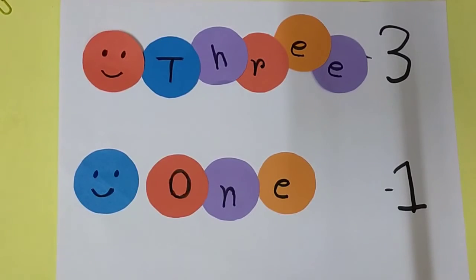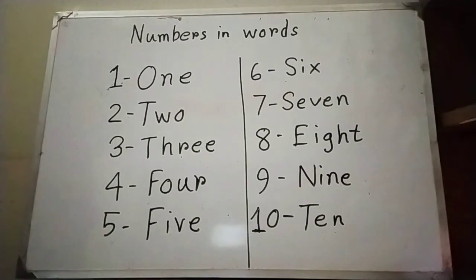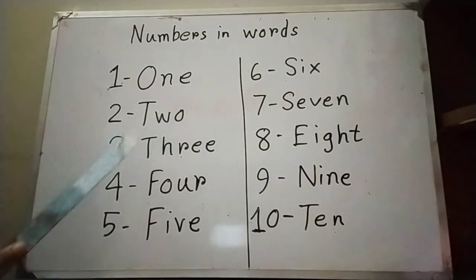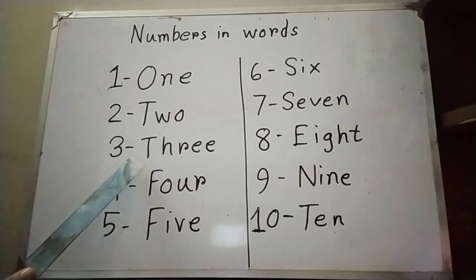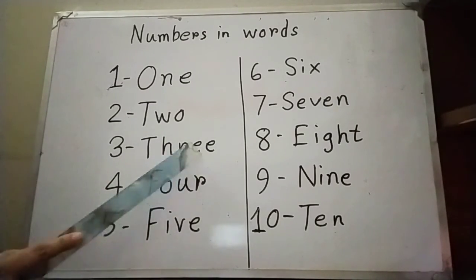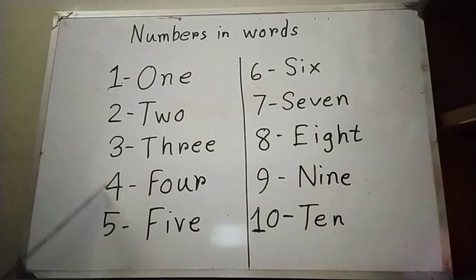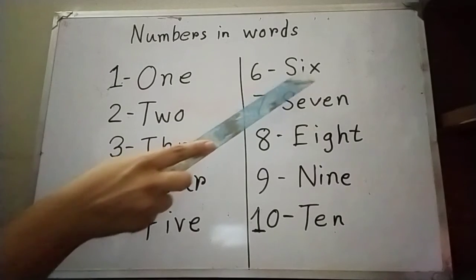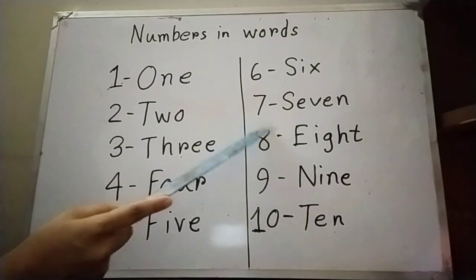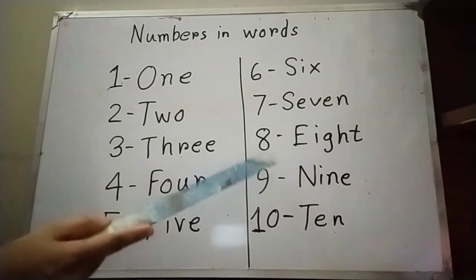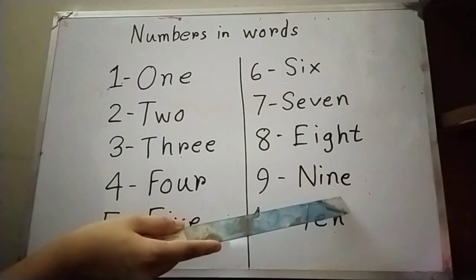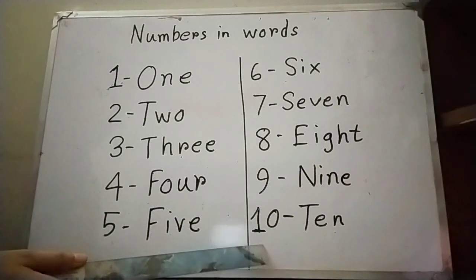You guys are learning very fast. Very good job. So, let's reverse the game. One — O-N-E, one. Next is two — T-W-O, two. Then three — T-H-R-E-E, three. Four — F-O-U-R, four. Next one is five — F-I-V-E, five. Then six — S-I-X, six. Seven — S-E-V-E-N, seven. Eight — E-I-G-H-T, eight. Then nine — N-I-N-E, nine. Next one is ten — T-E-N, ten.